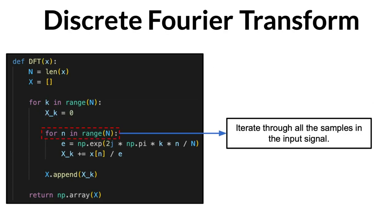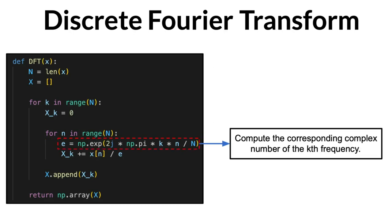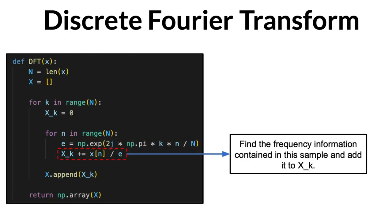Then, we iterate through all the samples within our input signal, and extract the amplitude and phase of frequency k by dividing each sample with the complex number corresponding to frequency k, adding this information to xk.